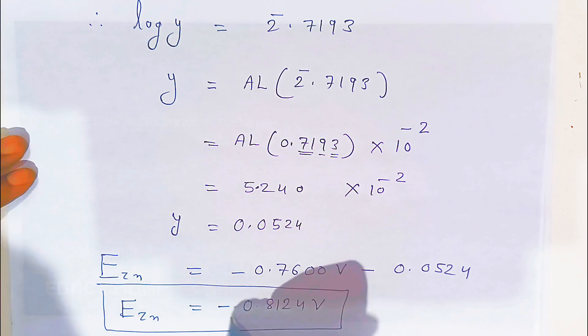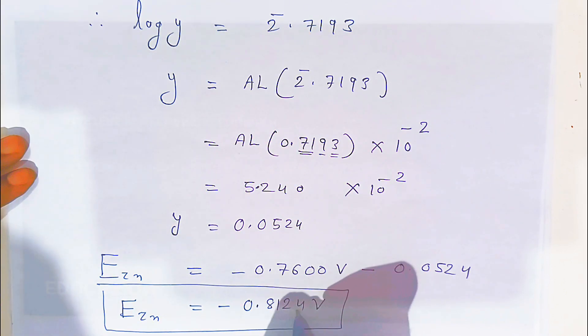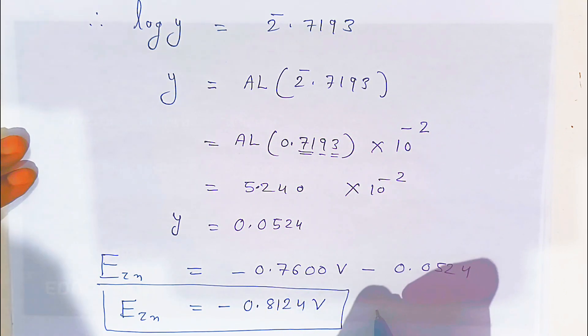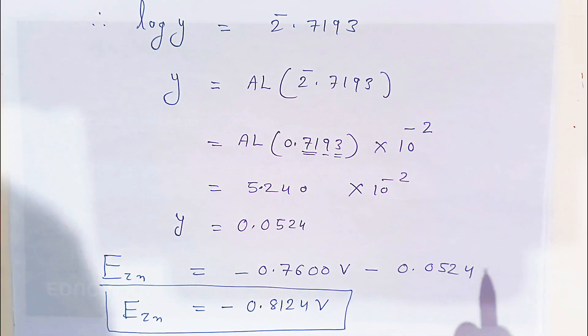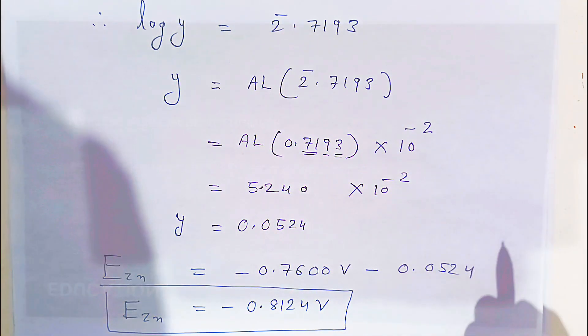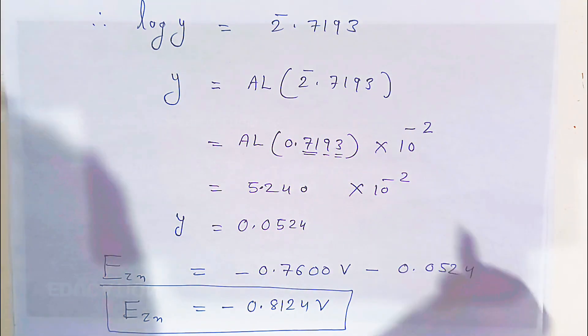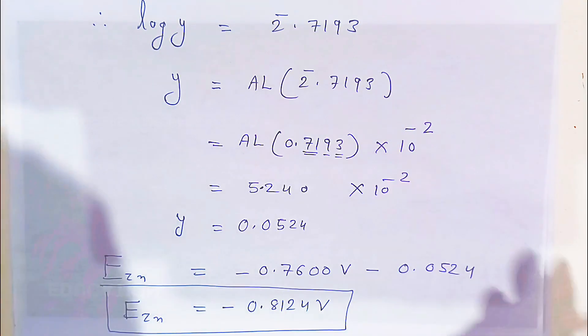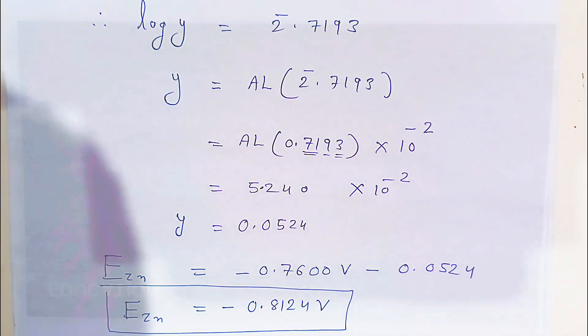So the zinc electrode potential is minus 0.824 volt. This is a two-mark question that may come in examination. If you like my video, please share and subscribe. Thank you very much, have a nice day, God bless you.